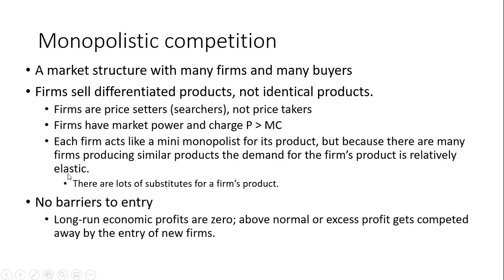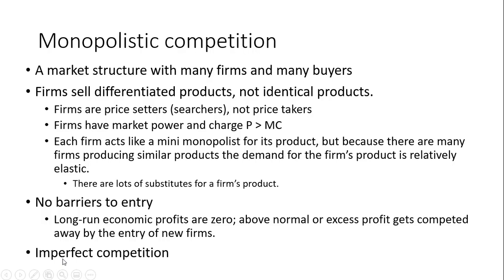This is a market structure with no barriers to entry. That implies that long-run economic profits are zero. Above-normal or excess profit gets competed away by the entry of new firms in the long run. This market structure is an example of imperfect competition.